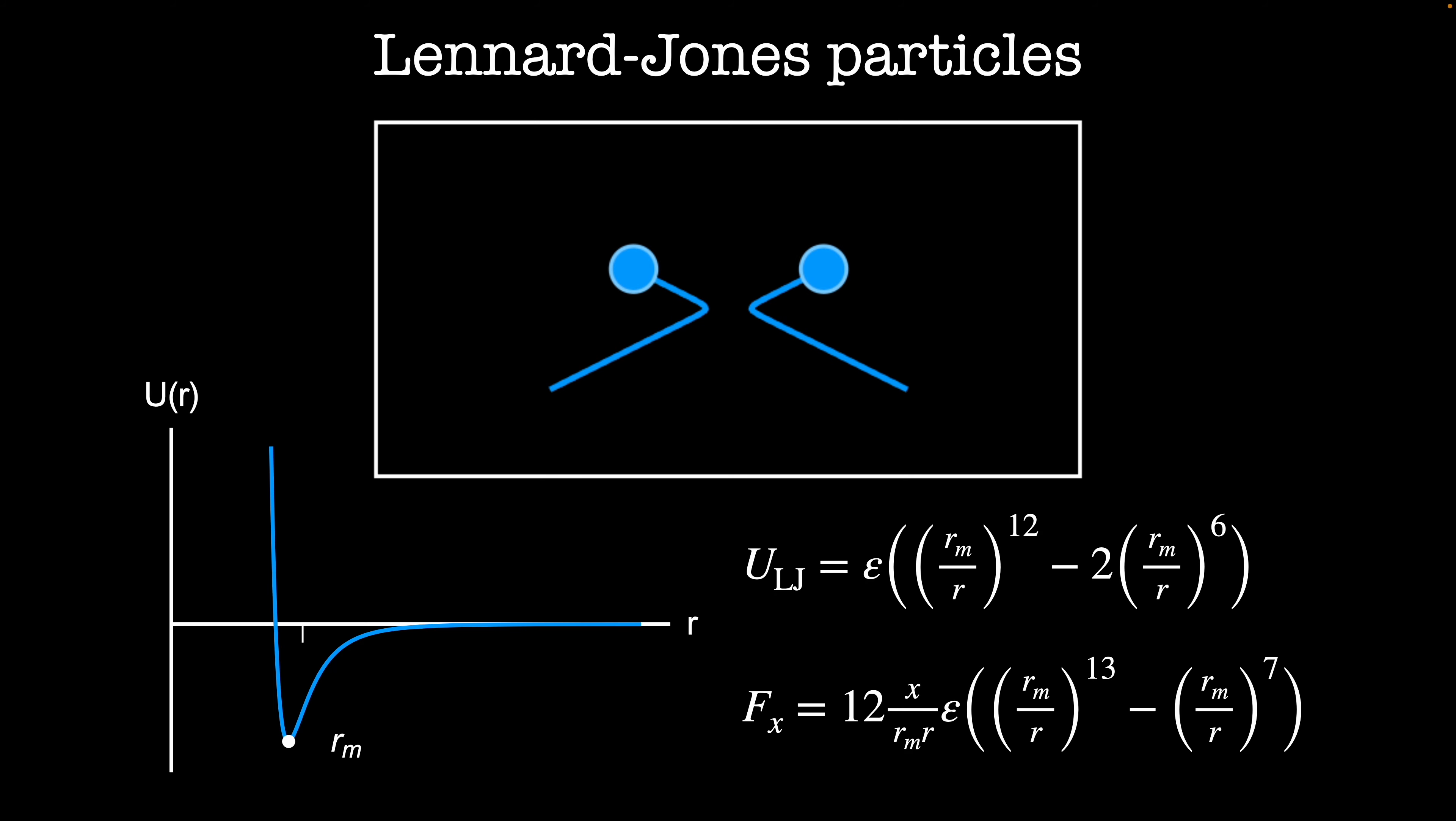In a standard Lennard-Jones simulation, we have many particles in our system, and each pair of particles interacts via a Lennard-Jones potential. This means that the energy depends on the position of all of the particles at a given instant in time,